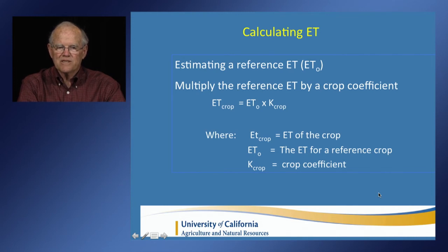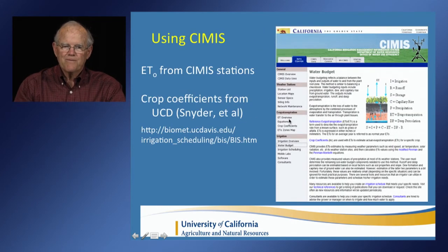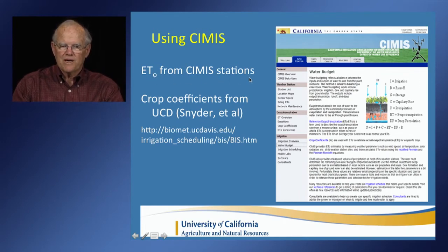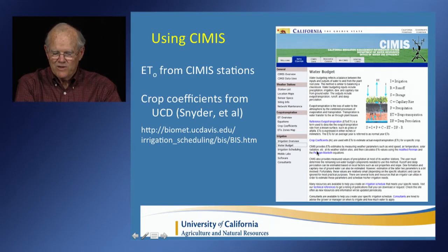Calculating ET — there are many references available. Broadly, you need two things: a reference ET and a crop coefficient. Those are available through the CIMIS program. Reference ET is provided from quite a few reference stations around the state, and crop coefficients are available from a website generated by the Biomet program at UC Davis. Those would be used to calculate ET, but you're still left with the problem of calculating irrigation efficiency, which is harder.